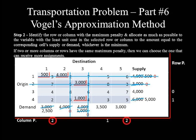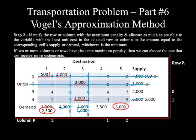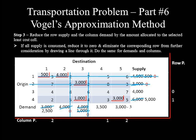The maximum penalty is 2, with column 1 and column 5 tied. Comparing allocatable amounts: for column 1 the smaller undeleted cost is 2, with allocatable amount of 2,500. For column 5, the smaller cost is 5, with allocatable amount of 3,000. Since 3,000 is greater than 2,500, column 5 is chosen to receive the next assignment. Allocating 3,000 to the cell with unit cost 5 reduces the demand to 0 and the supply from 5,000 to 2,000. Column 5 is crossed out because destination 5 demand is fulfilled.